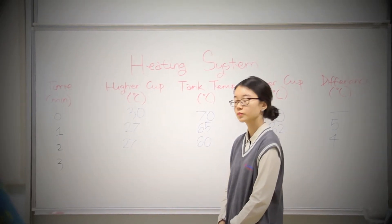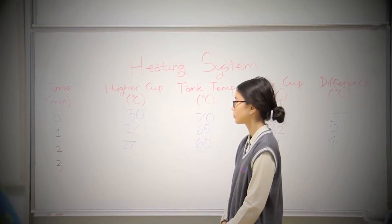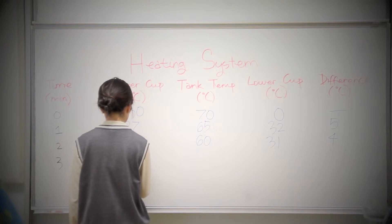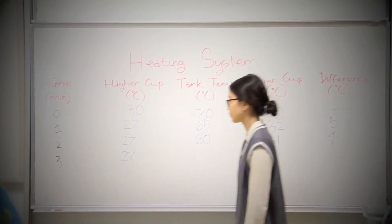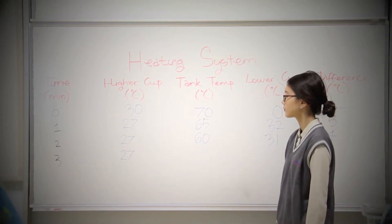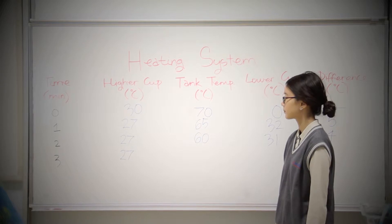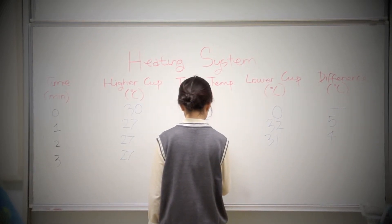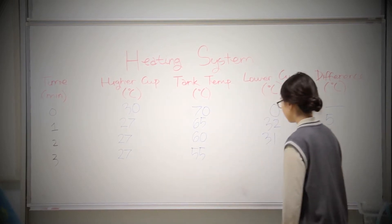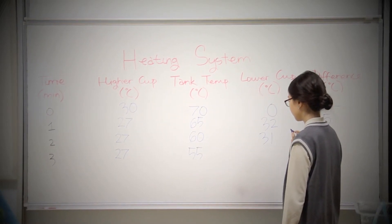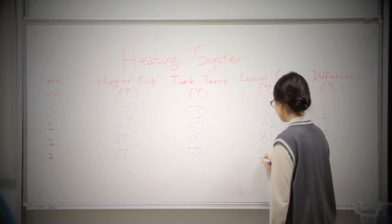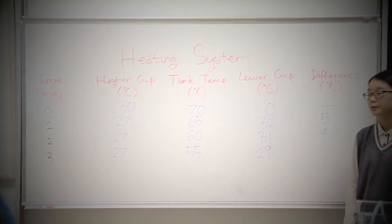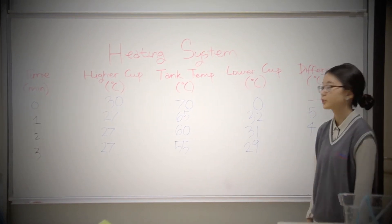After three minutes, the temperature in the higher cup is 27 Celsius — it remained stable. The temperature in the background tank became 55 Celsius. Also, the temperature in the lower cup is 29 Celsius. The difference between the higher cup and the lower cup is 10 Celsius.